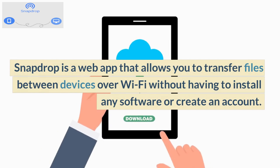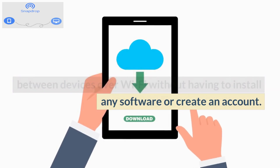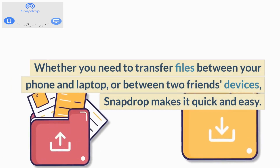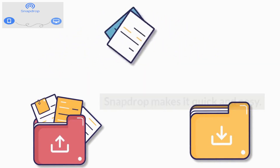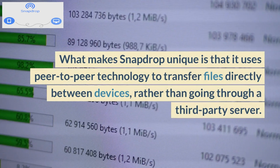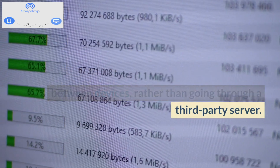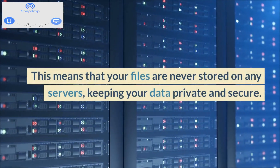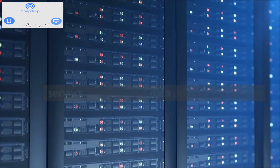SnapDrop is a web app that allows you to transfer files between devices over Wi-Fi without having to install any software or create an account. Whether you need to transfer files between your phone and laptop, or between two friends' devices, SnapDrop makes it quick and easy. What makes SnapDrop unique is that it uses peer-to-peer technology to transfer files directly between devices, rather than going through a third-party server. This means that your files are never stored on any servers, keeping your data private and secure.